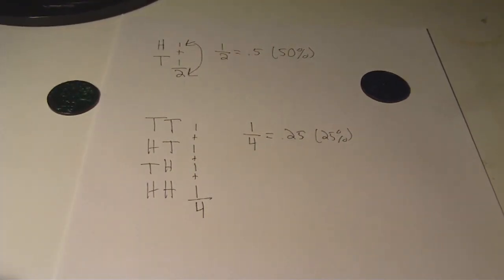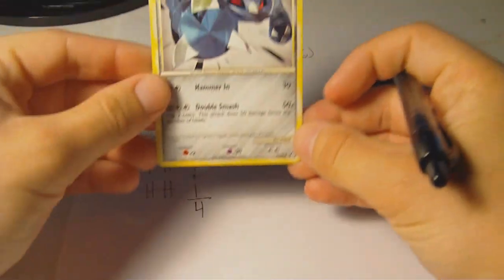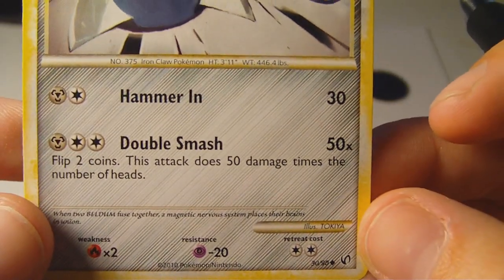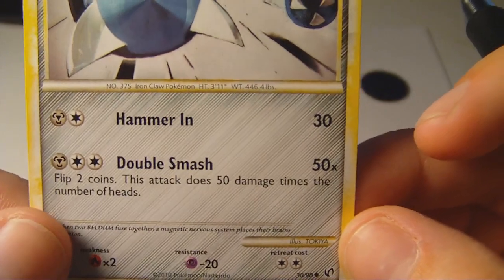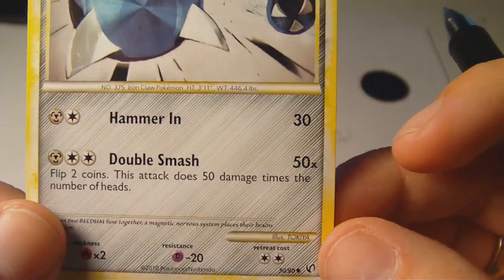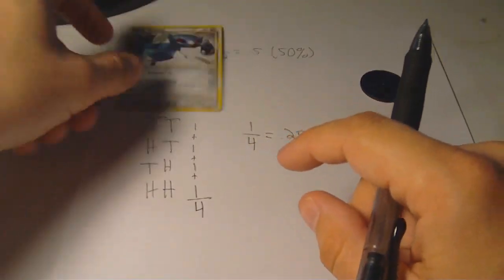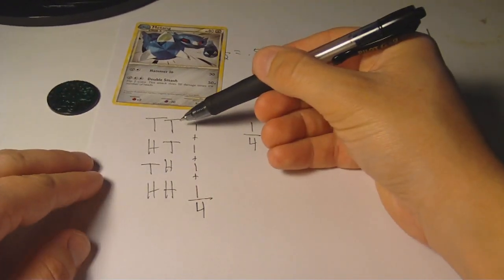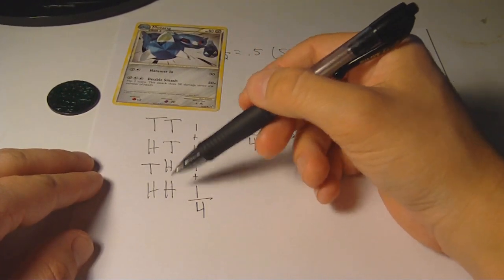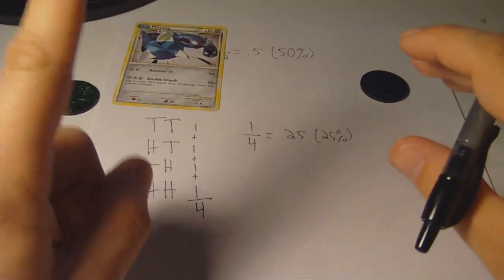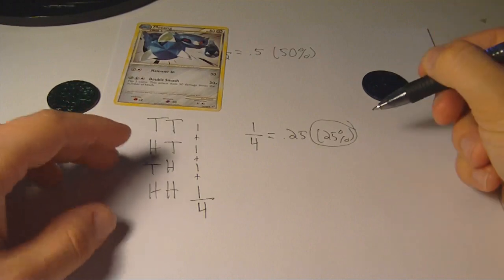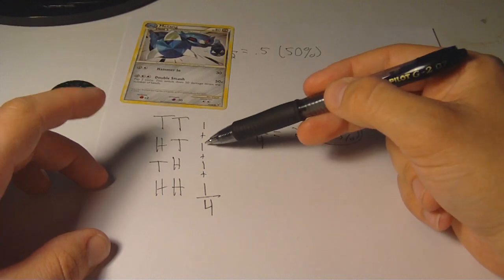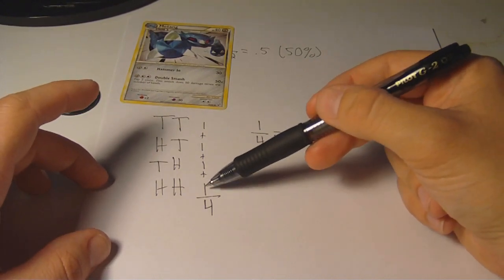Now let's compare this to an example in the card game. Consider Metang from Undaunted here. Its double smash attack tells the player to flip two coins and multiply the number of heads by 50 to get the final damage. This is identical to the two coin problem we just did. So remember that the outcomes of flipping two coins are tails-tails, heads-tails, tails-heads, and heads-heads, and there is a 25% chance of each of these results.